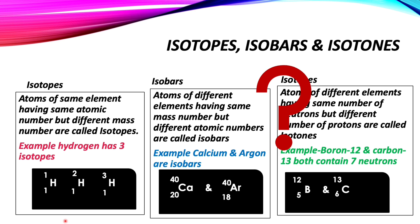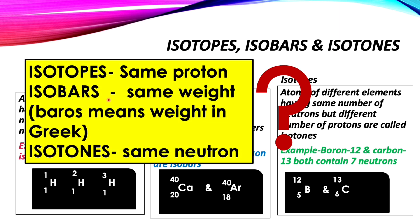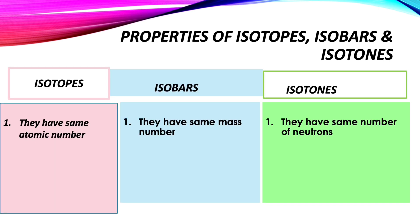To remember them easily: in 'isotopes' the P represents same proton; in 'isobars,' the Greek word 'baros' means weight, so same weight; and in 'isotones,' the N means same neutron.